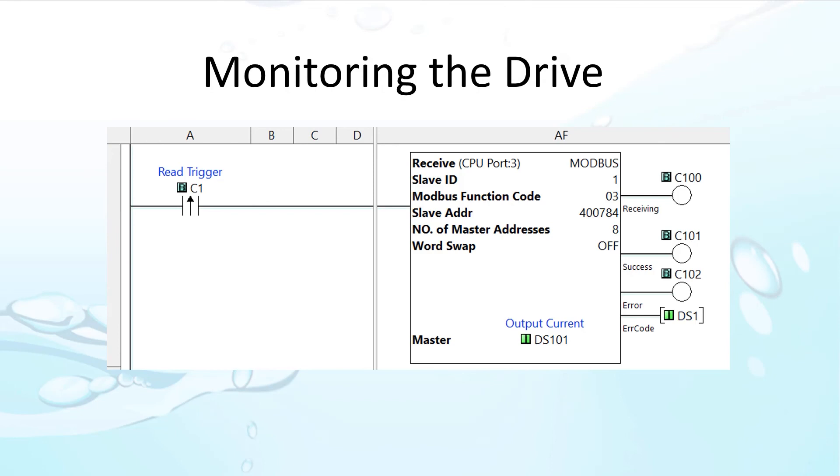In a previous video, we used an edge-triggered contact to issue the group read. That was just to keep the video simple. In a real world application, you would normally set up some kind of timed loop so the group can be updated periodically. That way, you don't have to remember to manually update the command each time you want a new set of values.